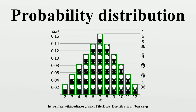Common probability distributions: the following is a list of some of the most common probability distributions, grouped by the type of process that they are related to. For a more complete list, see the list of probability distributions, which groups by the nature of the outcome being considered. Note also that all of the univariate distributions below are singly peaked — that is, values cluster around a single point. In practice, observed quantities may cluster around multiple values; such quantities can be modeled using a mixture distribution.